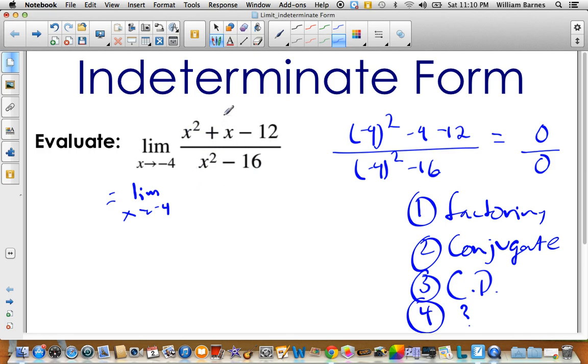So the obvious thing to do with this guy is factor the top and factor the bottom. So what adds to give me 1 and multiplies to give me negative 12. So that would be 4 and negative 3. So this guy factors to x plus 4 and x minus 3. And the bottom is a difference of squares. So square root of 16 is 4. So x plus 4, x minus 4.